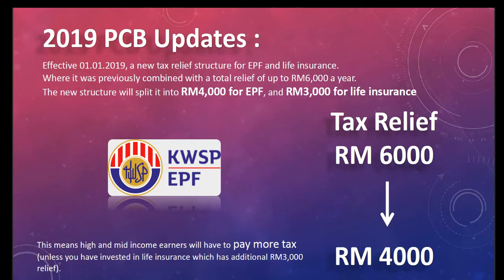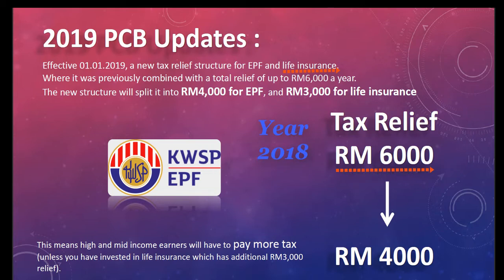Do you know that you should take note of these changes when you file your personal income tax for year 2019? There will be a separate tax relief category specifically for life insurance. Up until year 2018, tax relief for EPF and life insurance was combined as a single category worth up to RM6,000. But effective 1st January 2019, an individual will be eligible for RM4,000 EPF contribution tax relief plus RM3,000 life insurance tax relief.